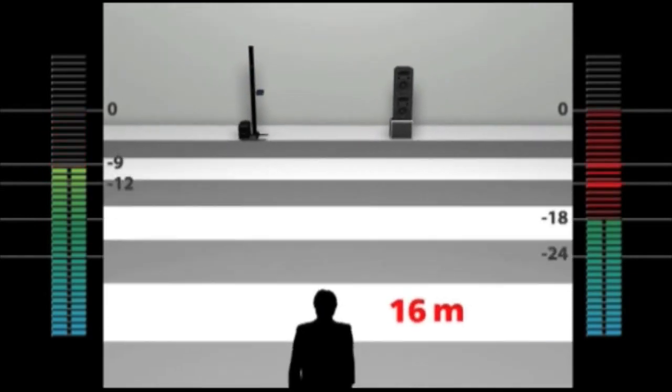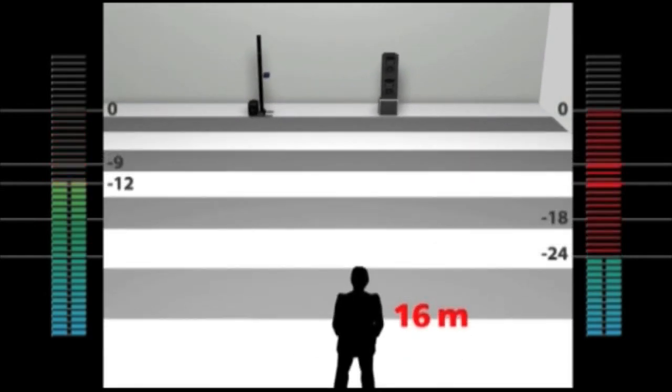At a distance of 16 meters, the difference has doubled. Minus 12 for the L1 and minus 24 for the conventional speaker. 12 dB is a very significant difference, as you can hear right now.